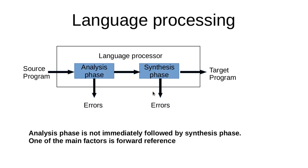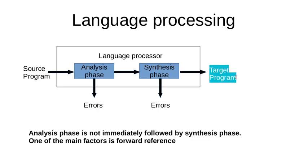There is a scope of generating errors in the synthesis phase as well. If there are no errors, then we move on to the target program. The source program is the input and the target program is the output. This is a basic representation of language processing using a block diagram.